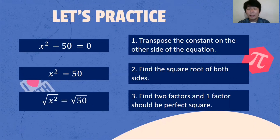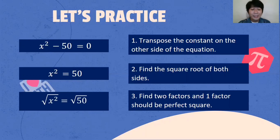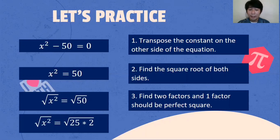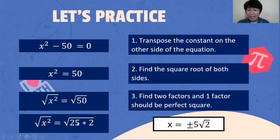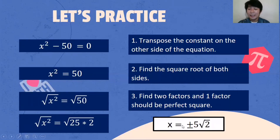Always remember that we need two factors and one of the factors must be a perfect square. If there's no other factor, then the answer would be positive and negative square root of 50. But 50 has two factors where one is a perfect square: 25 multiplied by 2 is 50, and 25 is a perfect square. So the answer is X is equal to positive and negative 5 square root of 2. That is the final answer.